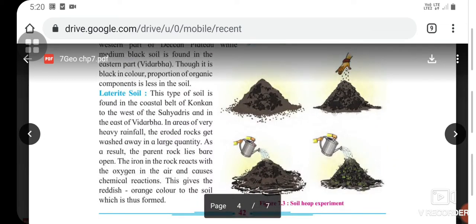Third is laterite soil. This type of soil is found in the coastal belt of Konkan, to the west of the Sahyadris, and in the east of Vidarbha. In areas of very heavy rainfall, the eroded rocks get washed away in large quantity. As a result, the parent rock lies bare open. The iron in the rock reacts with oxygen in the air and causes chemical reactions. This gives the reddish-orange color to the soil which is thus formed.